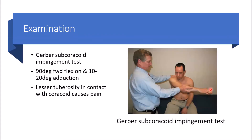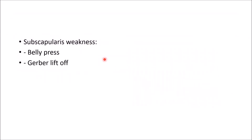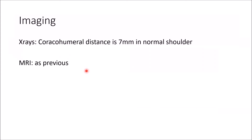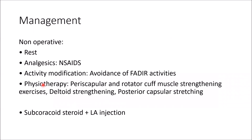For examination, the subcoracoid impingement test involves forward flexion of the arm to 90 degrees and adduction to about 10 to 20 degrees; this brings the lesser tuberosity into contact with the coracoid process, causing pain. Also assess for subscapularis muscle weakness using the belly press and lift-off tests. On X-ray, the coracohumeral distance should be about 7 mm in a normal shoulder. MRI is the same as for subacromial impingement — look at the rotator cuff and for bursitis.